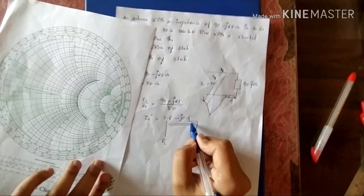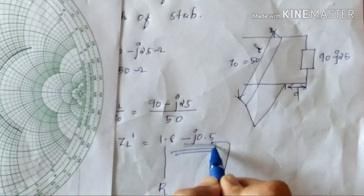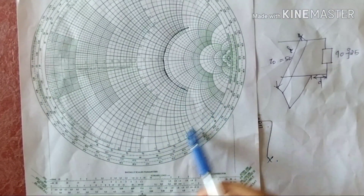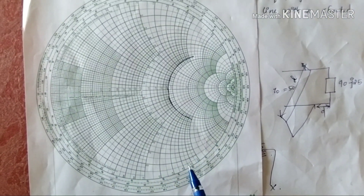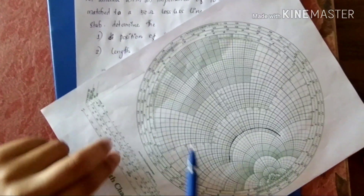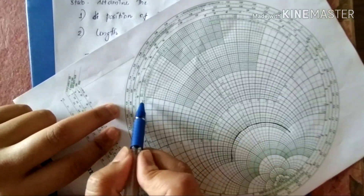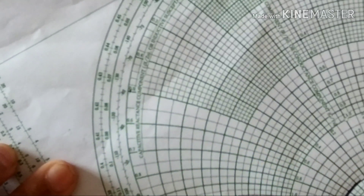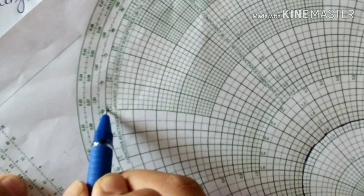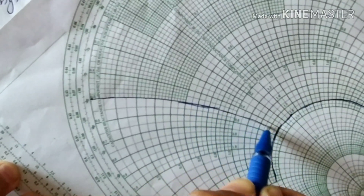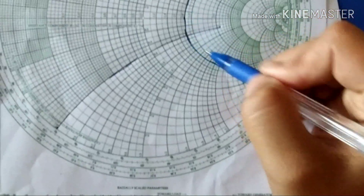Next, we consider the X-axis. The value is minus 0.5. We locate the minus 0.5 circle on the negative X side of the Smith Chart and mark this point. We find the intersection of the R equals 1.8 circle and the X equals minus 0.5 circle to locate the normalized load impedance point.